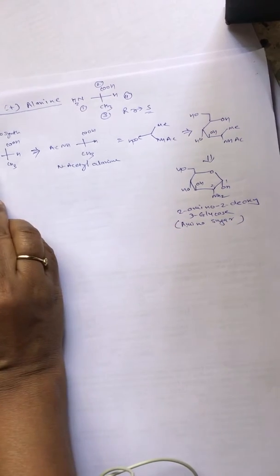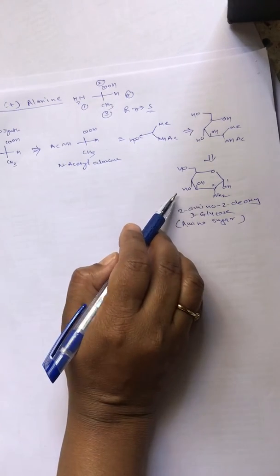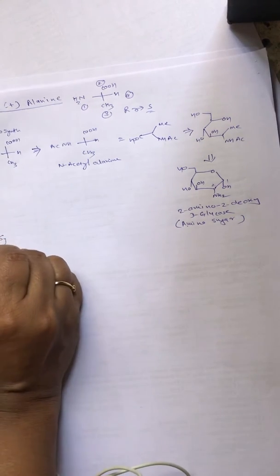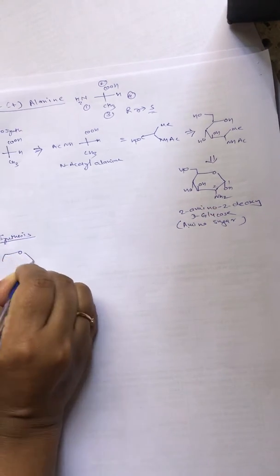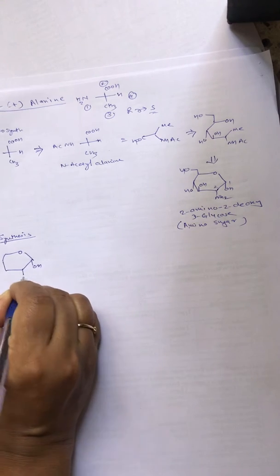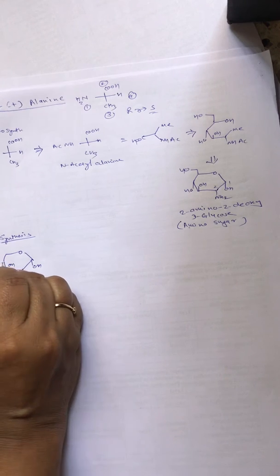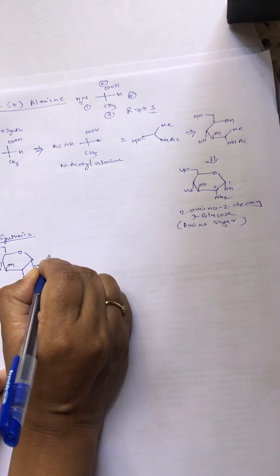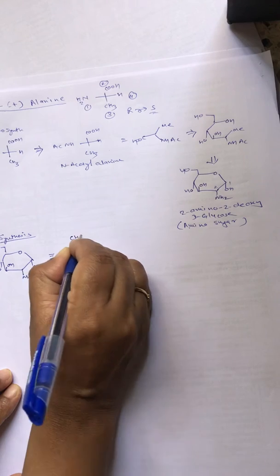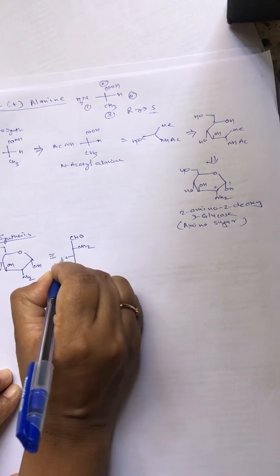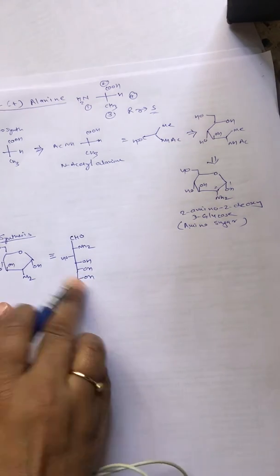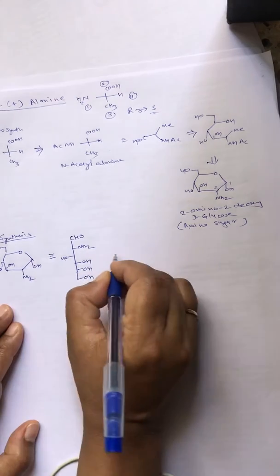So we prepared alanine from 2-amino-2-deoxy-D-glucose, which is an amino sugar. Now we will go for synthesis. We will start from the compound 2-amino-2-deoxy-D-glucose. This is the ring formula, which can also be written in the open-chain formula as CHO-NH2.